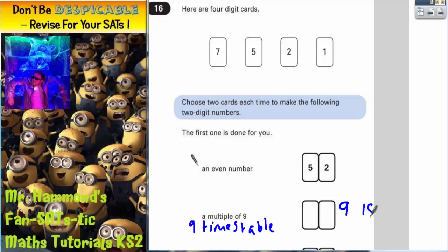So we've got 9, 18, 27, 36, 45, 54. Now we could keep going but we may not need to.